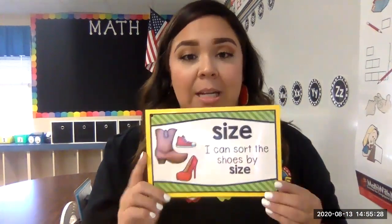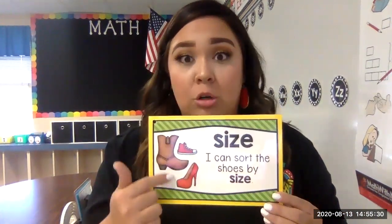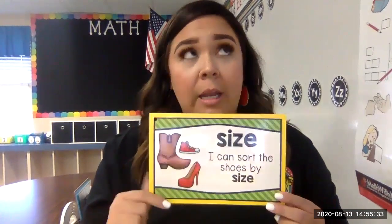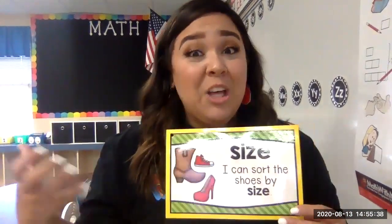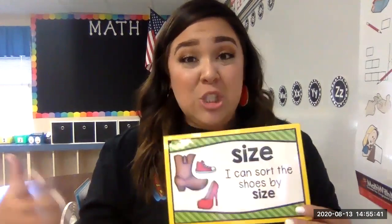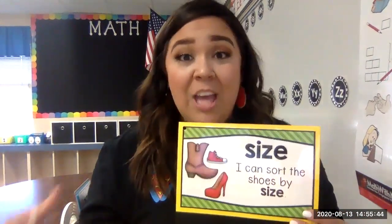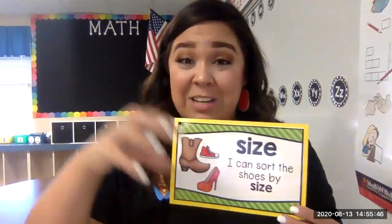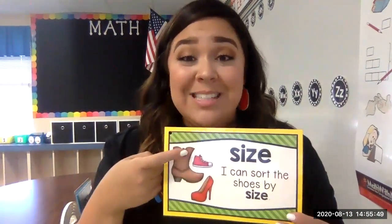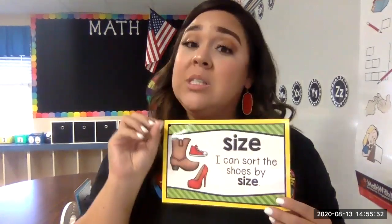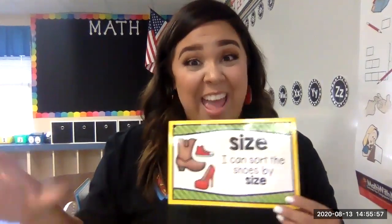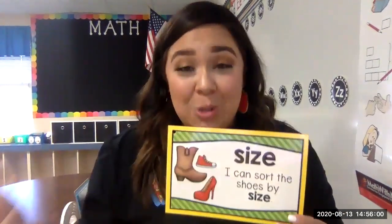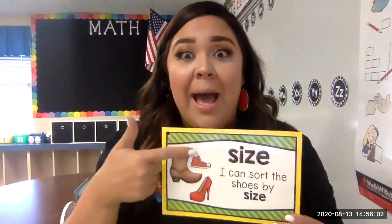The third way that you can sort data is by size. Think about the people in your home — you may have smaller feet than your mom, your mom might have smaller feet than your dad. So if you were to gather all of the shoes in your home, you can sort those in different categories by the attribute of size: the small shoes together, the medium shoes together, and the large shoes together. You just sorted data by size!